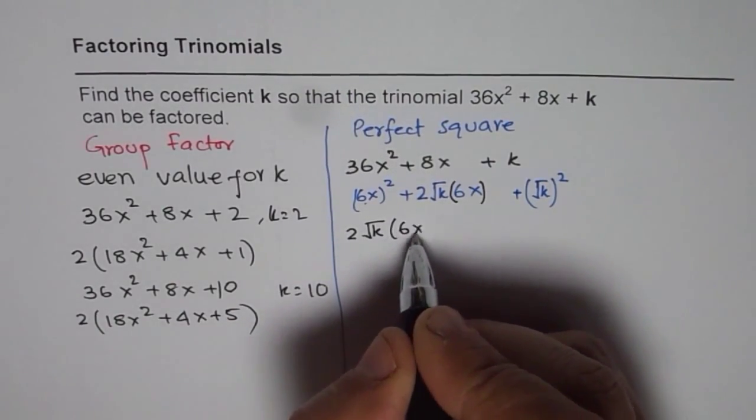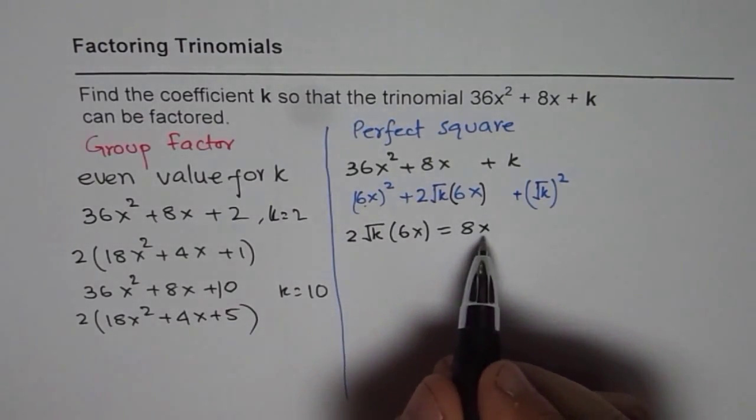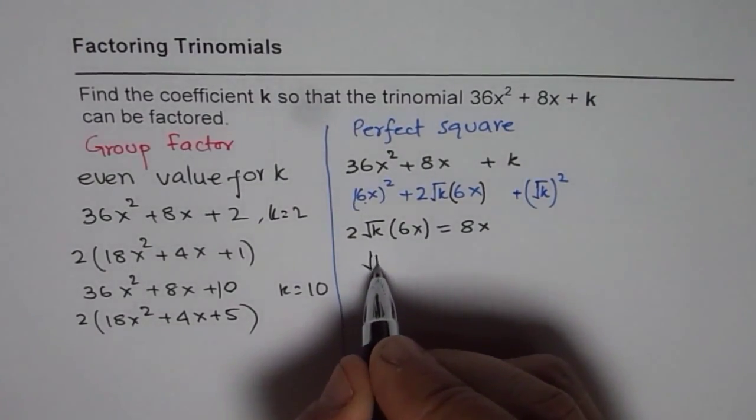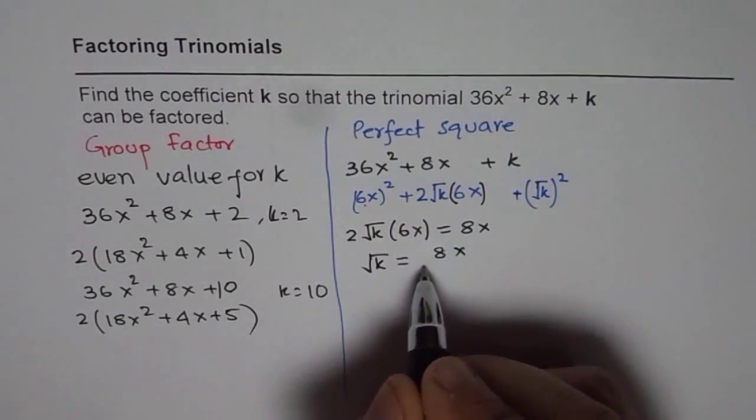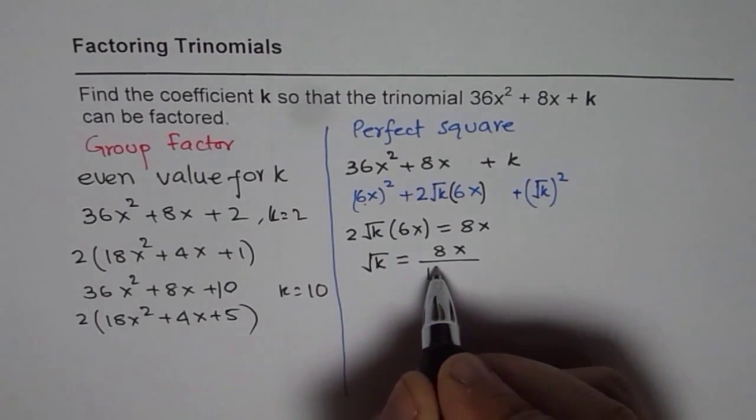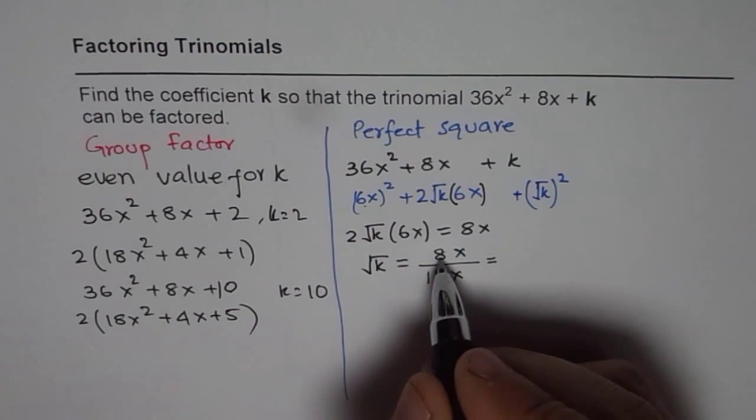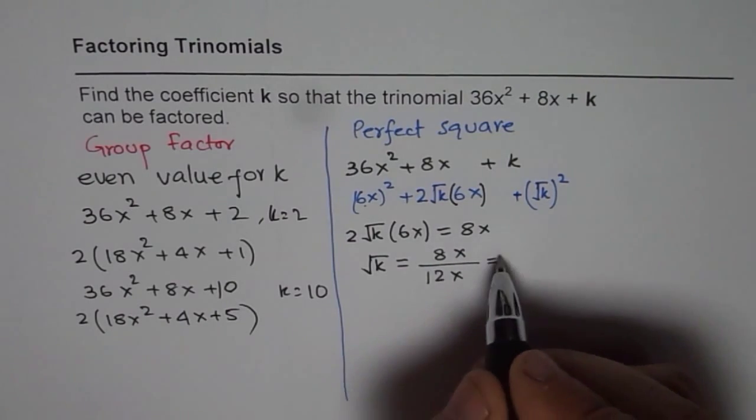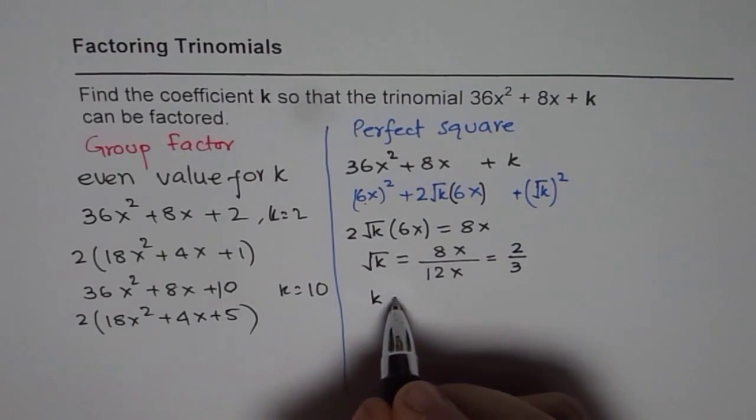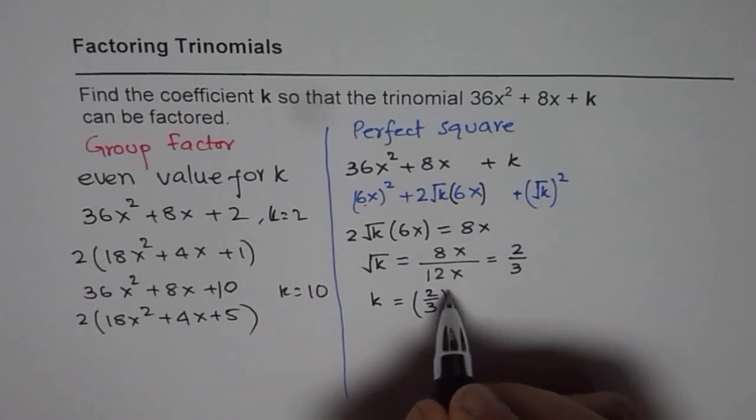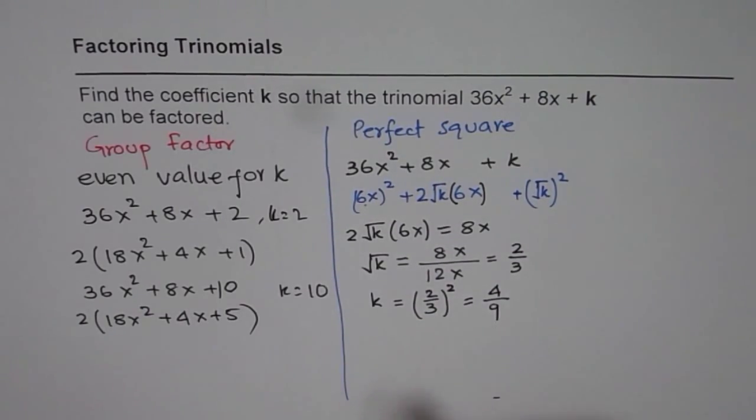This can be simplified. So we can write this as √k equals to 8x divided by 12x, which could be written as x and x will cancel. You can divide these by 4. So if you divide that by 4, you get 2/3. So k equals (2/3)², which could be written as 4/9.